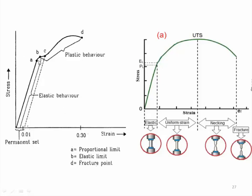Beyond the proportional limit, the material still behaves elastically — meaning if I stress it up to this region and remove that stress, the material will regain its natural shape. Then there comes a point B: if I increase stress beyond this point, the material will not regain its natural shape; rather, it will plastically deform. This point is called the yield stress, yield point, or yield strength. Below this yield stress the material behaves like an elastic body; beyond it the material behaves like a plastic body and will permanently deform.